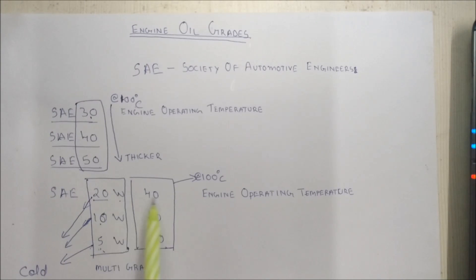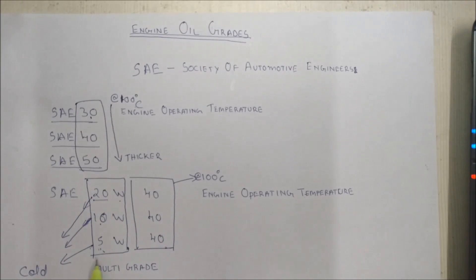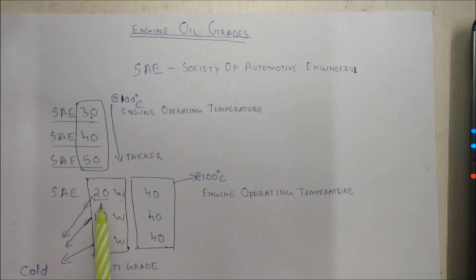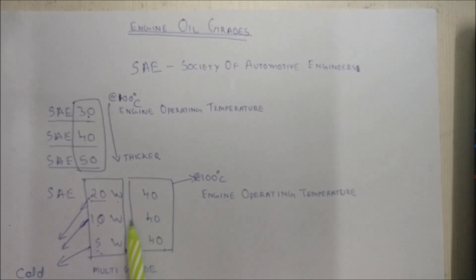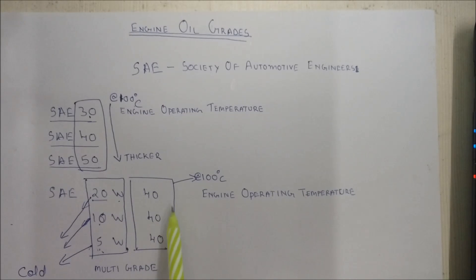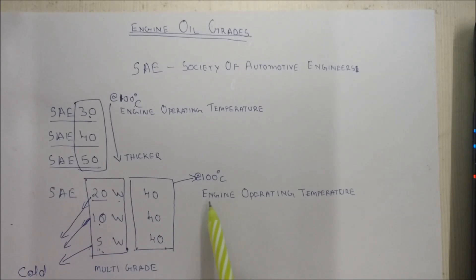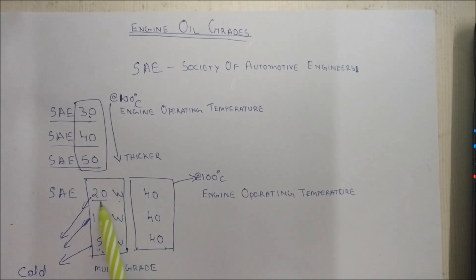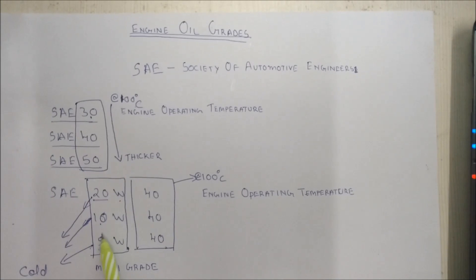To understand these oils, you can split these numbers into two parts. The first portion gives you the viscosity of the engine oil when the engine is cold, and the second portion gives you the viscosity when it reaches 100 degrees Celsius, the engine's operating temperature. As the first numbers decrease, the thinner the engine oil is when cold.